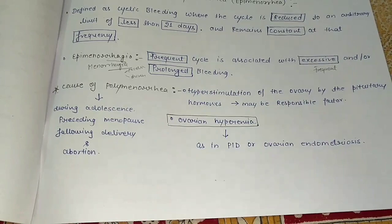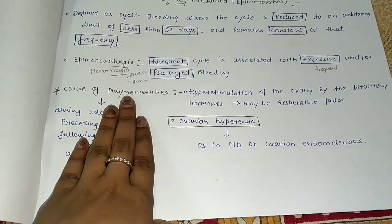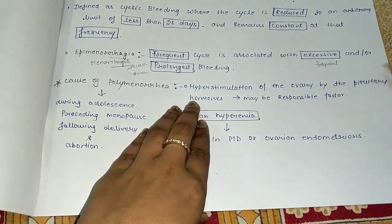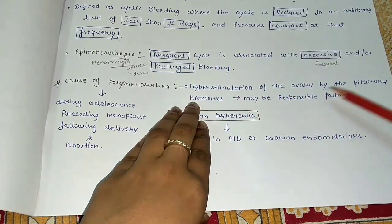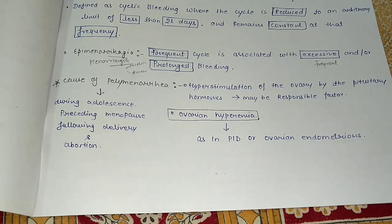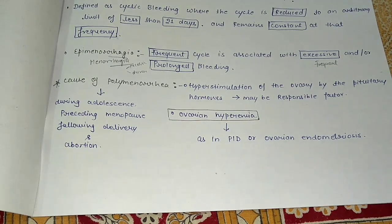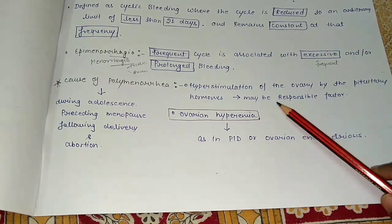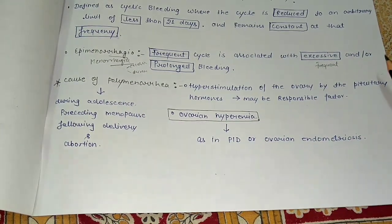Now, know the cause of polymenorrhea. What is the cause of polymenorrhea? Hyperstimulation of the ovary by the pituitary hormones may be a responsible factor. If the pituitary gland hyperstimulates the ovary, this is a factor for polymenorrhea.